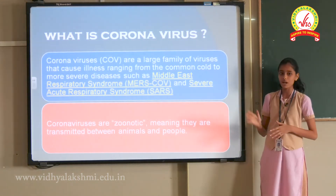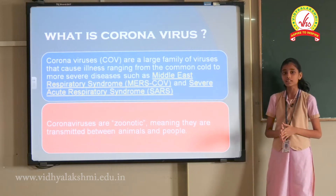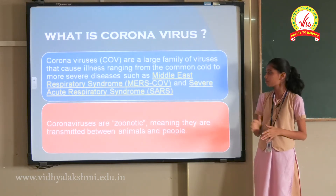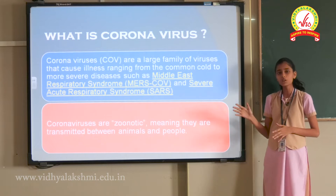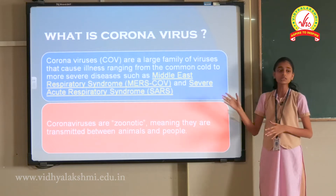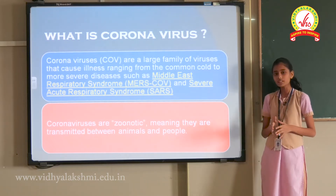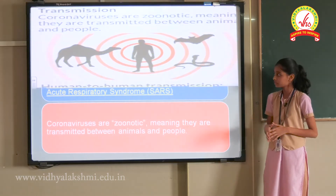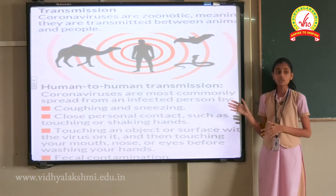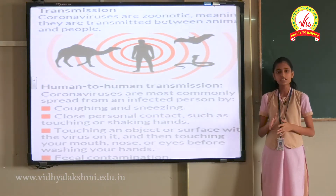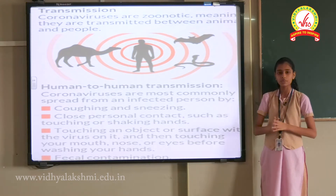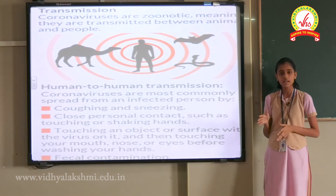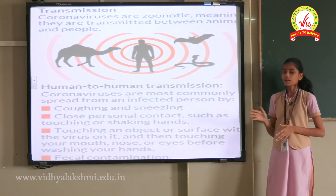Coronavirus are a large family of viruses that cause illness ranging from the common cold to more severe diseases. Coronavirus are also known as zoonotic, which means they are transmitted from animals to people. However, coronavirus is not only transmitted from animals to people — it is also transmitted from human to human.